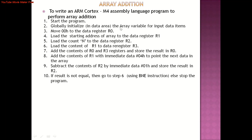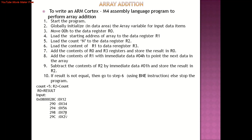The DCD directive allocates one or more words of memory aligned on a 4-byte boundary. Using the DCD assembler directive, we assign the input data elements into the corresponding memory locations.